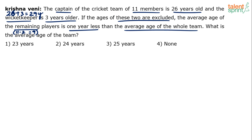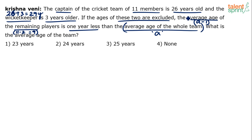Let us solve it using the regular process. Let us assume that the average age of the whole team is A. Then the average age of the remaining players will be A minus 1, because it is one year less than this average. So if the average age of the whole team is A, average age of the remaining players will be A minus 1.